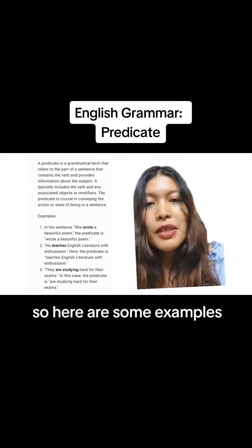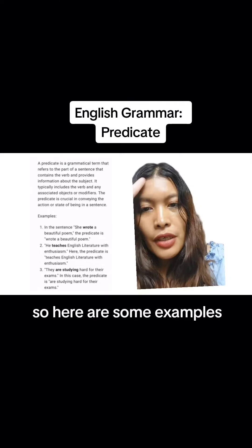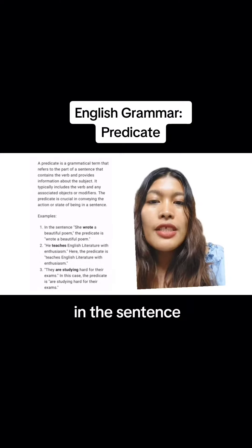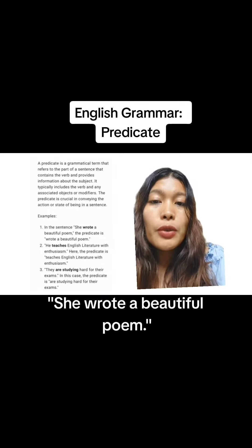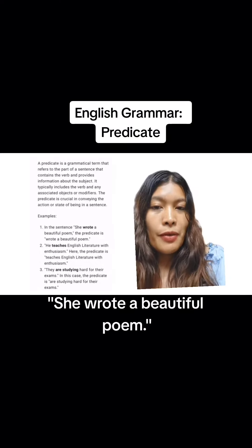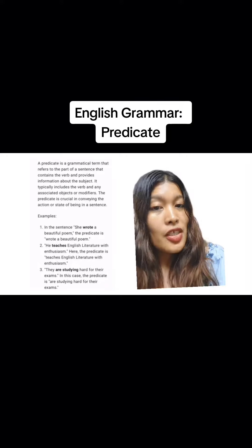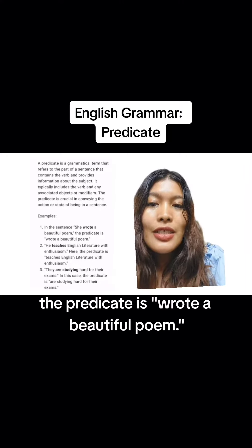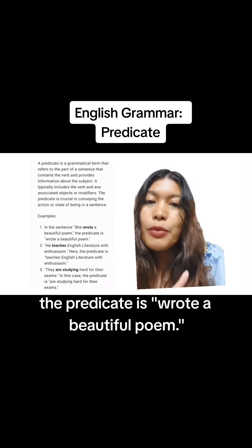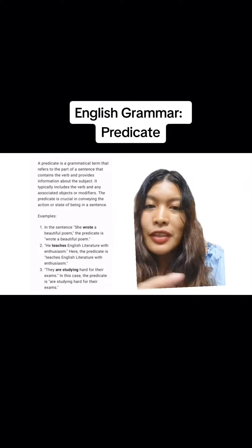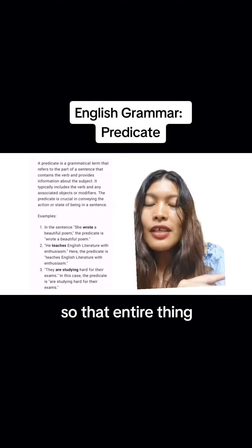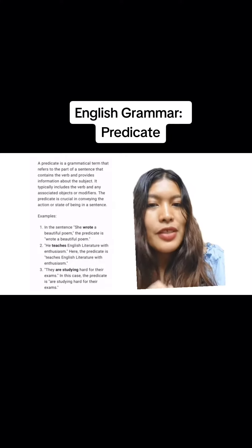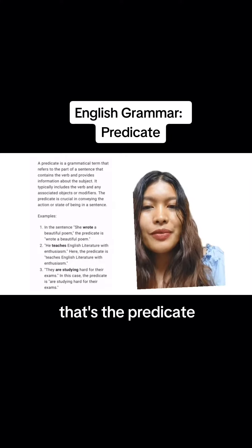So here are some examples. In the sentence, "she wrote a beautiful poem" — she is the subject. The predicate is "wrote a beautiful poem." So that entire thing, that's the predicate.